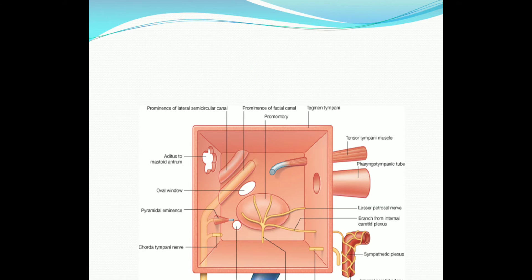Let me start with the route of spread. This is the schematic representation of the middle ear. The roof of the middle ear is the tegmen. There are mainly two routes of spread: either the disease process causes destruction of the tegmen — by hyperemic decalcification in acute otitis media, or by cholesteatoma in case of squamous chronic otitis media. The first route of spread is direct bone erosion.